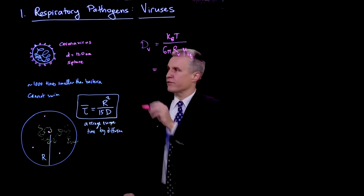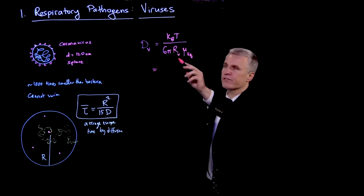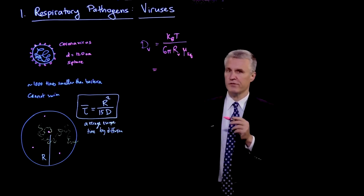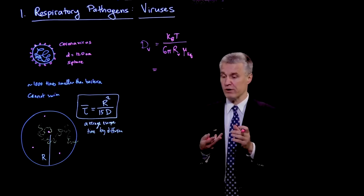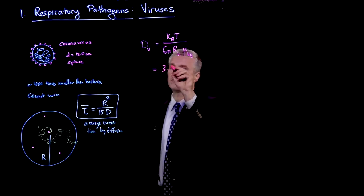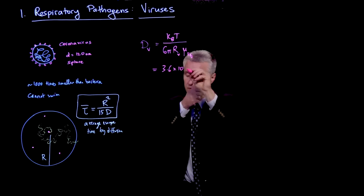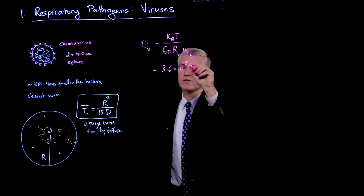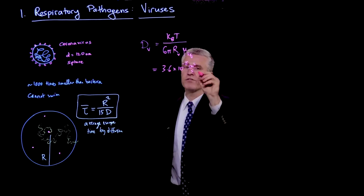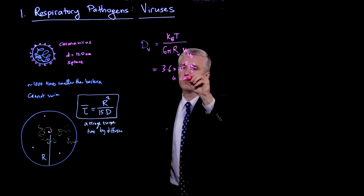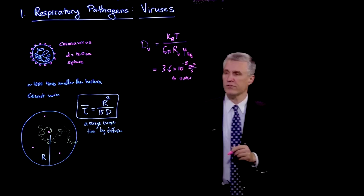And if you figure out for the size of 120 nanometers, if we use the viscosity of water, if we assume the droplets are just water, then this is 3.6 times 10 to the minus 8 centimeters squared per second in water, where we use the viscosity of water.